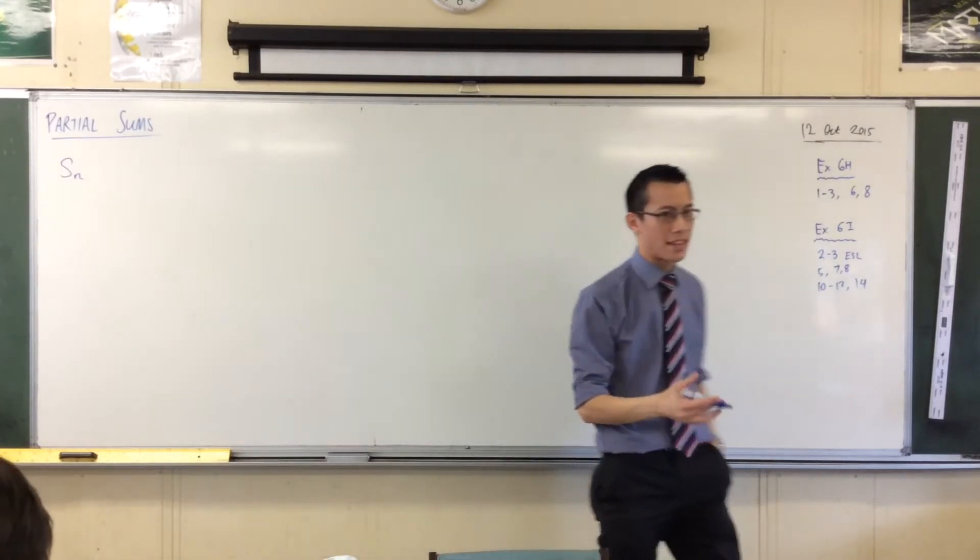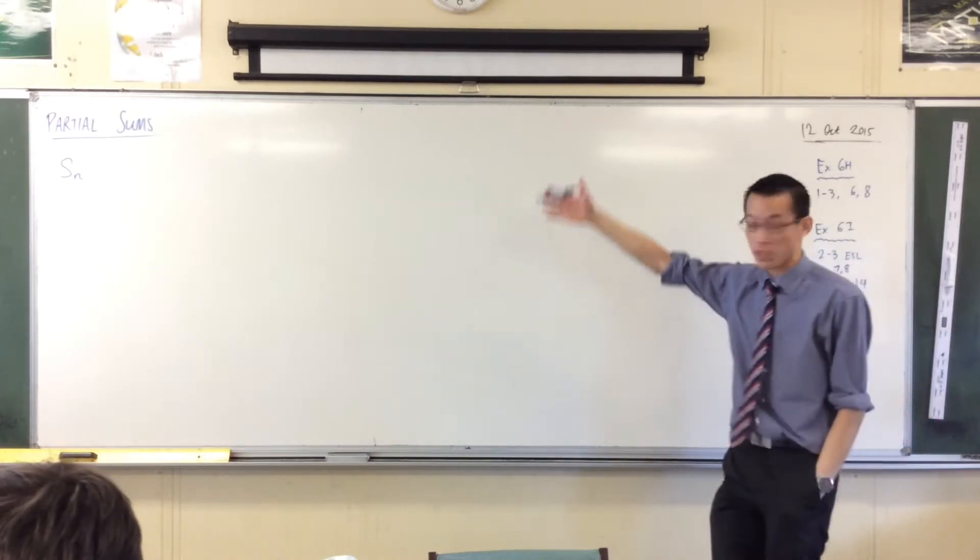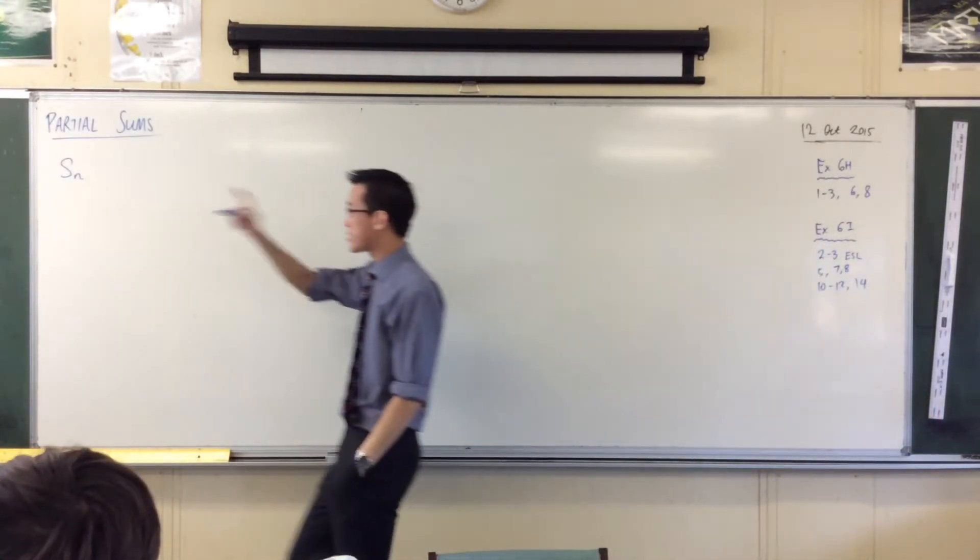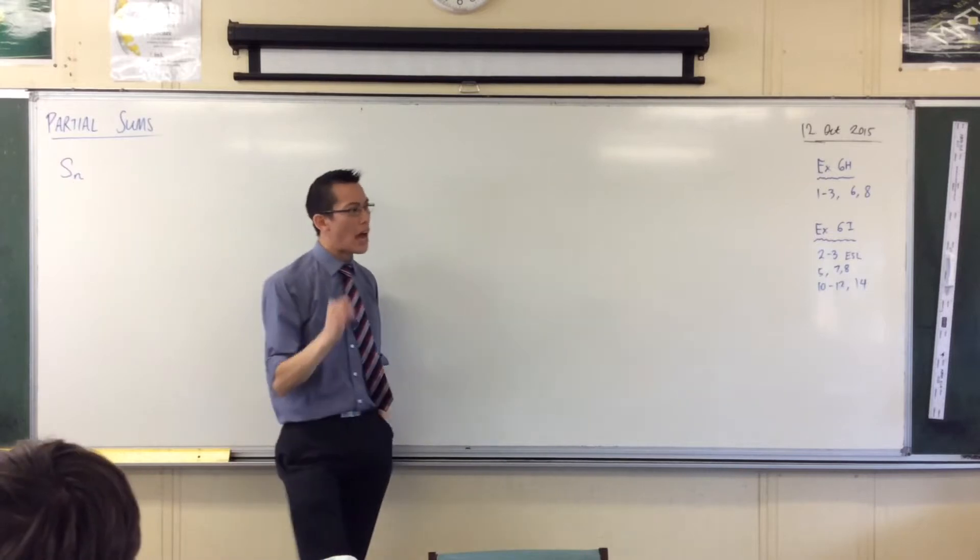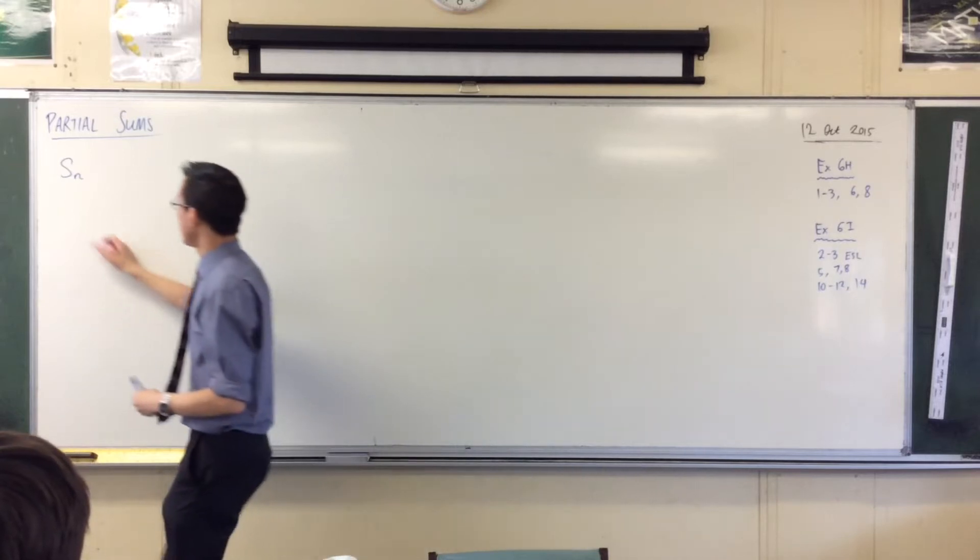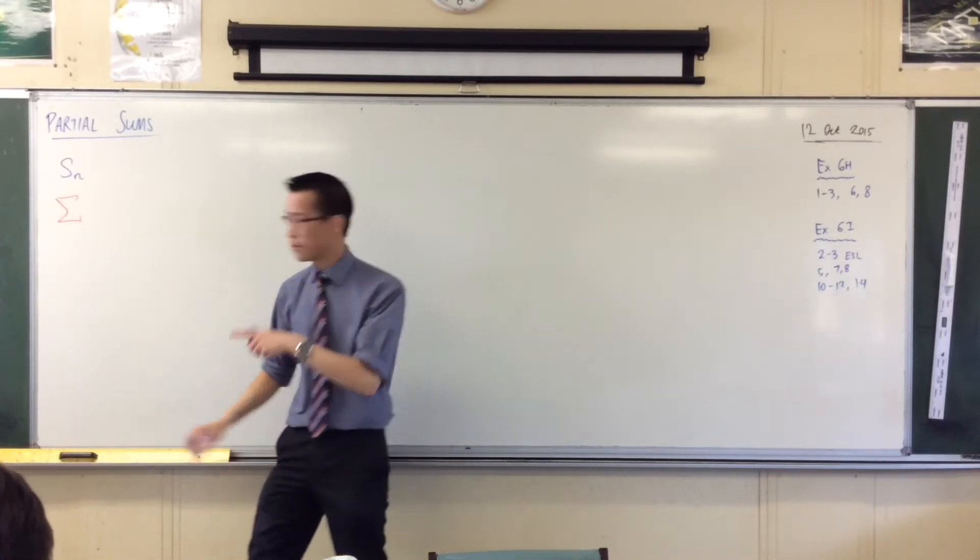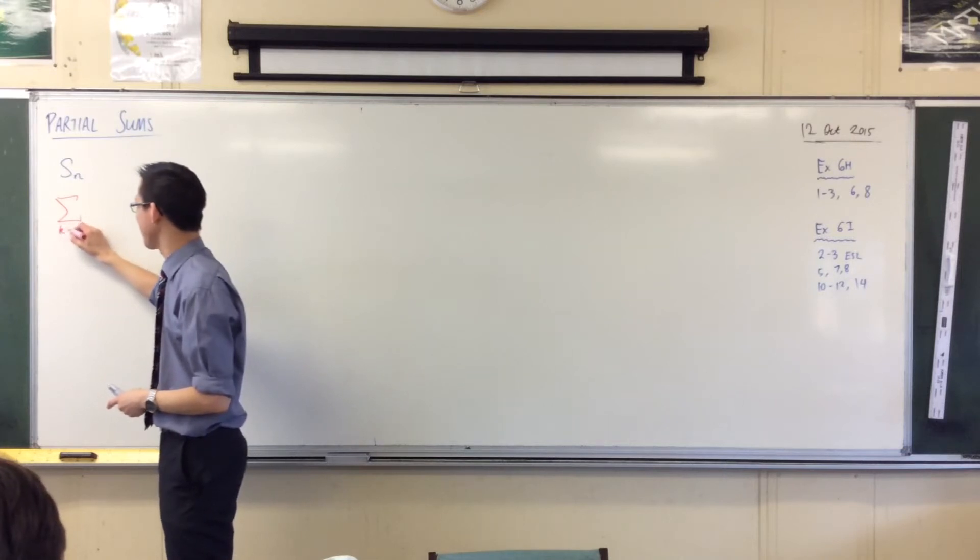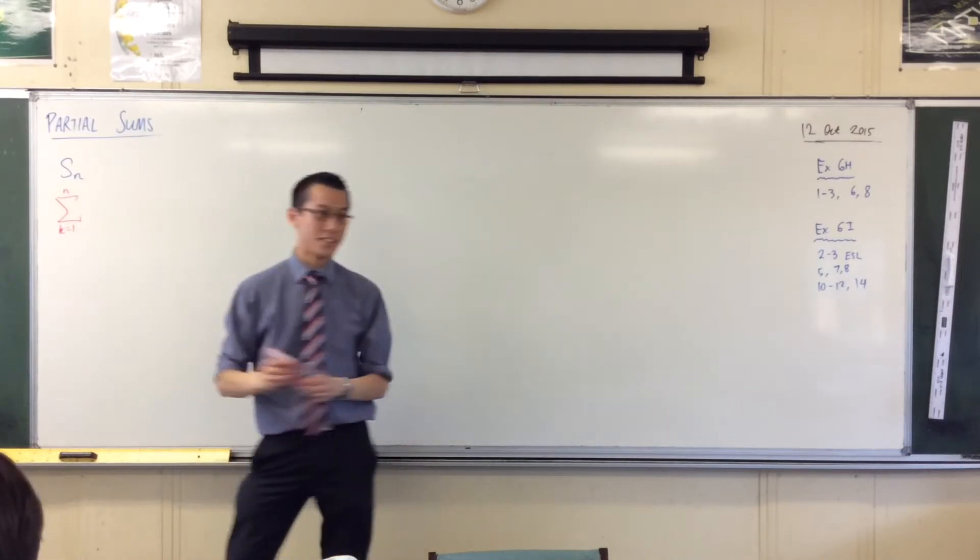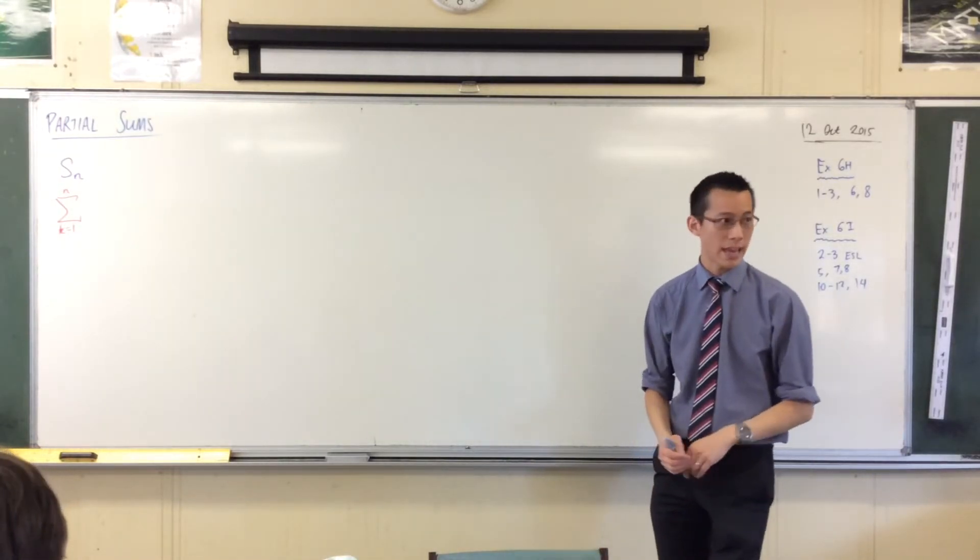This is kind of like the cousin of sigma notation. It's talking about exactly the same thing. It's a sum, a partial sum. The way I read this is the sum of the first n terms. So this is a little bit like the sum from k equals 1 up to m. Big kind of equivalent in my head. The sum of the first n terms.